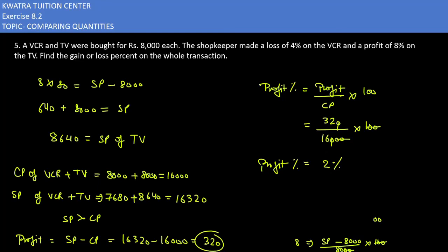So profit percent on the whole transaction is 2% only. This is the answer for question number five. Now we will be moving to question number six.